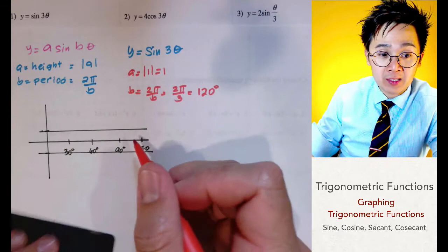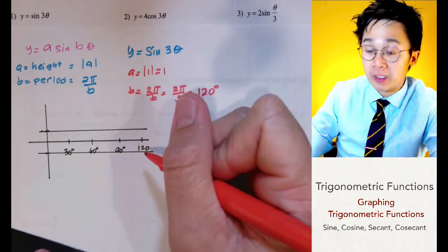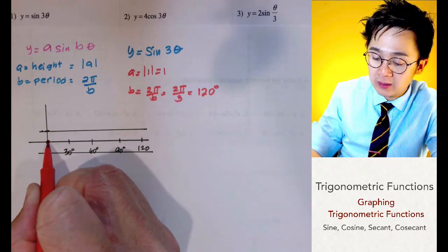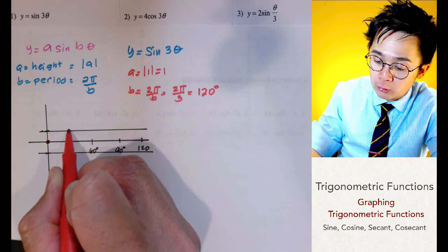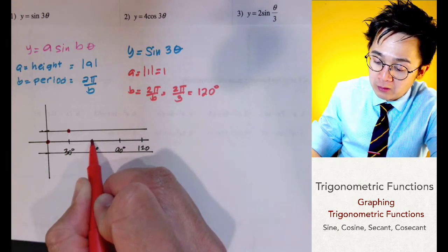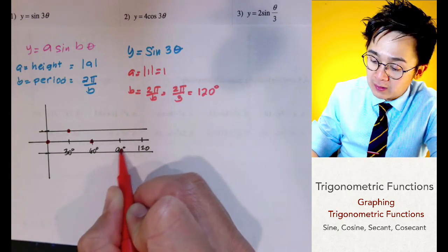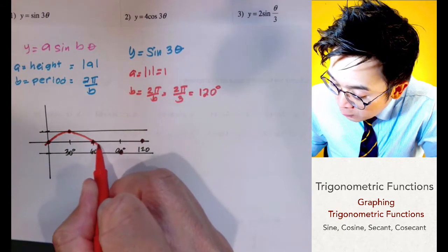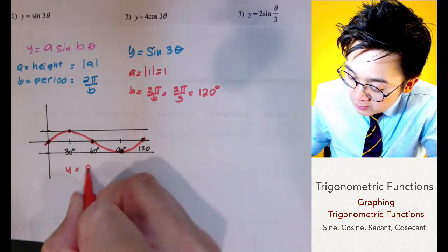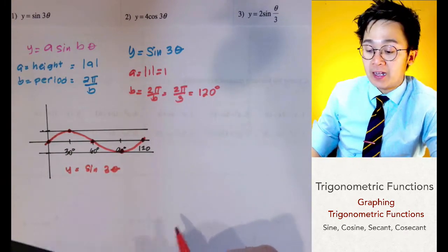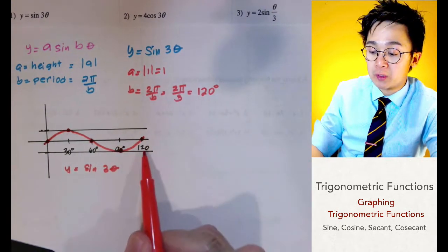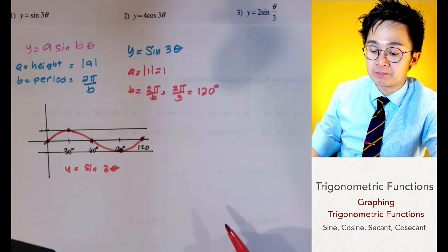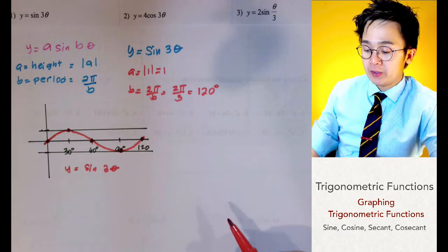To graph sine three theta, the sine function always starts at the center. So we start at the origin, go up to the top of the amplitude at 30 degrees, come back down to touch the axis at 60 degrees, continue to the minimum at 90 degrees, and return to the axis at 120 degrees, creating a smooth curve. This is the graph of y equals sine three theta for one period.